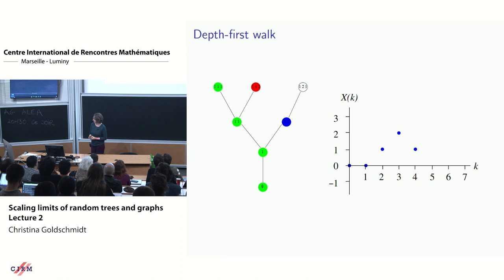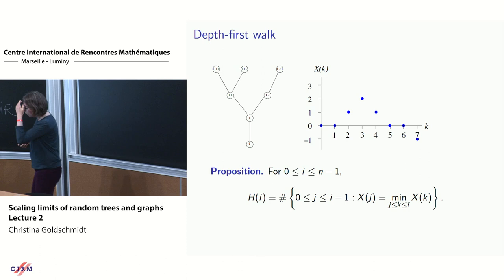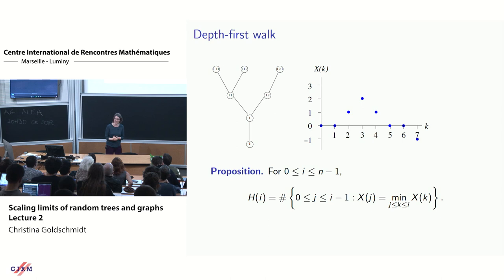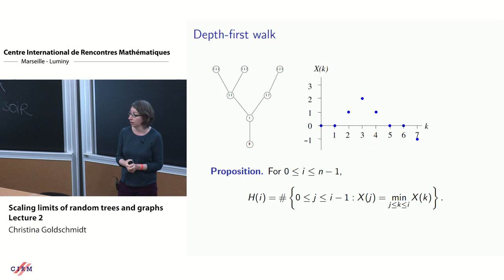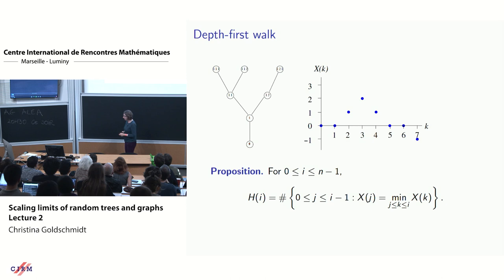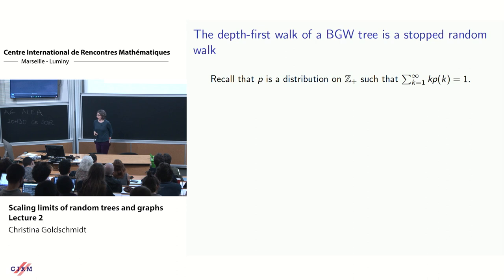The process always ends at minus 1, since we're summing children and subtracting one each time. A proposition — which was an exercise on the example sheet — is that you can recover the height process from the depth-first walk. I encourage those who haven't seen this to draw pictures and convince yourself; it takes some thinking but is worth it. So the depth-first walk encodes the tree.